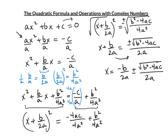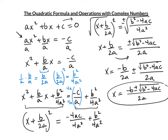Notice the common denominator — we combine this into one expression: x = (-b ± √(b² - 4ac)) / (2a). This is the quadratic formula.